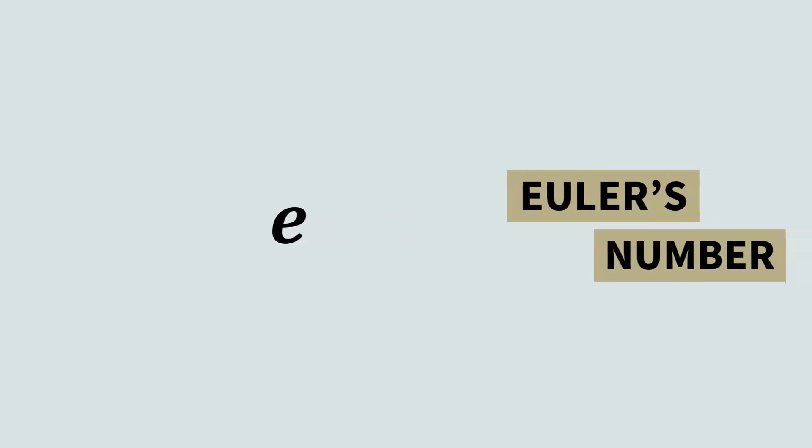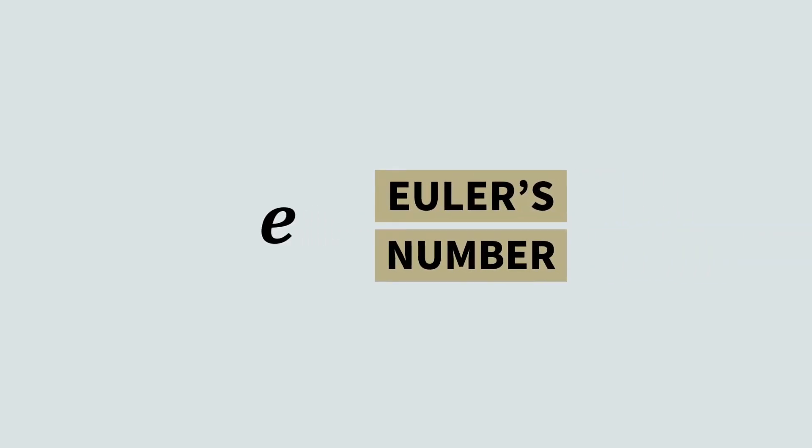This is Euler's number and it equals 2.71828 and goes on forever. This raises the question: what is E and why is it equal to 2.71828 and so on?